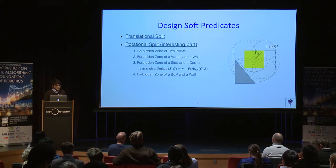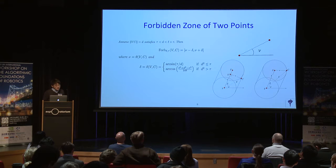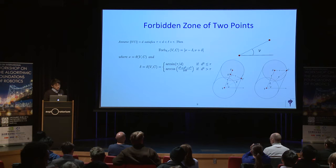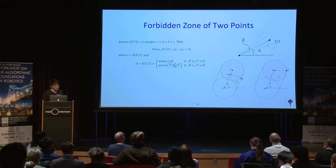How do we compute the forbidden zone of two points? Suppose we place a link on a corner and there is another corner feature. If the link is without thickness, the forbidden zone is just a direction, as shown in the top right figure. If the link has thickness, the forbidden zone becomes a cone, and there are two situations to compute this angle range.